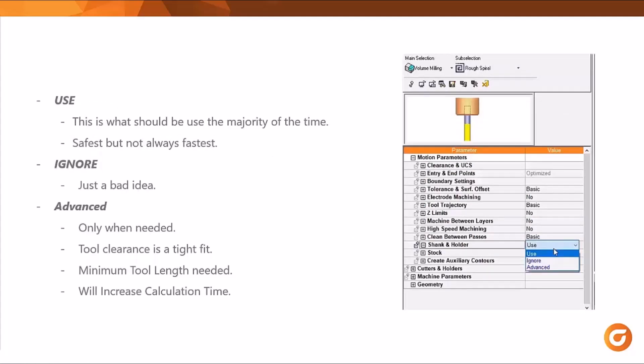The new dialog at first doesn't look a lot different. What we want to emphasize here is the most common setting you want to use is simply setting the shank and holder to 'use.' It's the easiest to set up — there's nothing to modify and it gives you a safe and fast result. There are times where changing those settings can make it faster to calculate and use, but on average the best option is to leave this on 'use.'